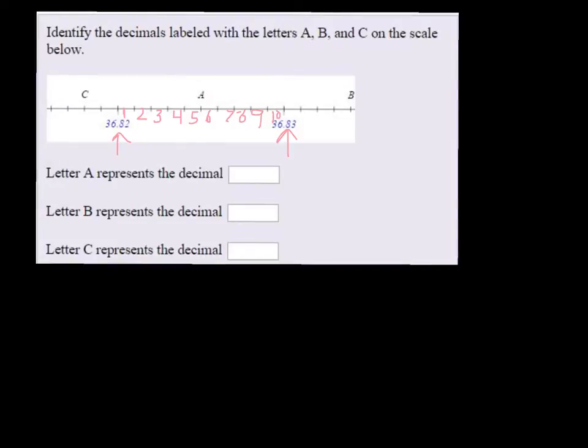So each space is worth, in this case, a thousandth because we're between 36.82 and 36.83. So any number in between there is going to go to the thousandth.